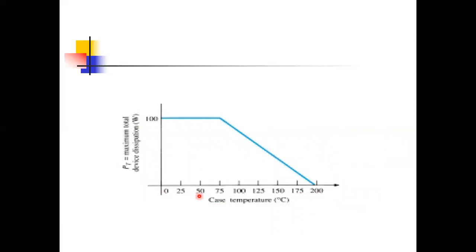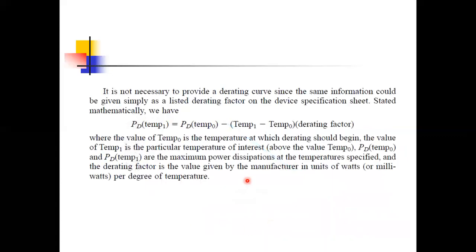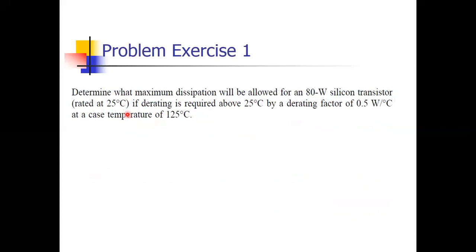When case temperature reaches 200°C, power handling capacity is zero, meaning the device can handle heat only up to 200°C. To calculate dissipated power at a particular temperature, you need the initial temperature, the initial power dissipation, the temperature difference, and multiply by the derating factor. Example: determine the maximum dissipation for an 80-watt silicon transistor rated at 25°C, with a derating factor of 0.5 W/°C and a case temperature of 125°C.